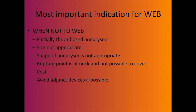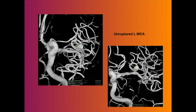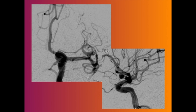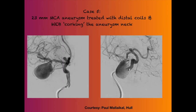Avoid unnecessary devices because they increase cost. WEB can be used on its own, with a stent, or with coils — I personally don't do the stent combination often. For a wide neck MCA unruptured aneurysm, WEB makes it look very easy: you go in, drop the basket, and treat the aneurysm — it's completely gone. With the 17-system you can now use WEB in smaller aneurysms too.